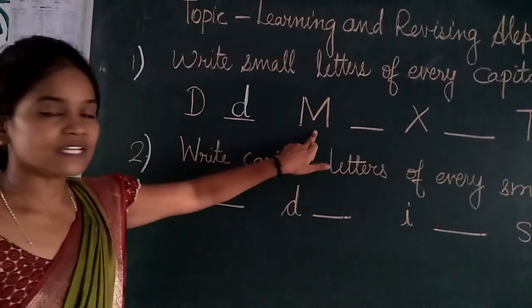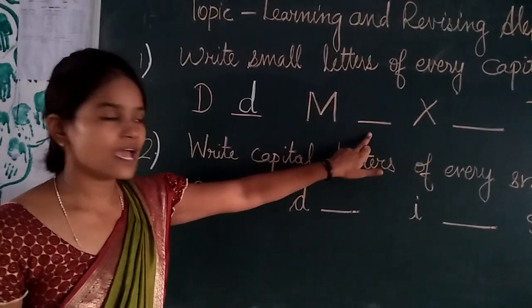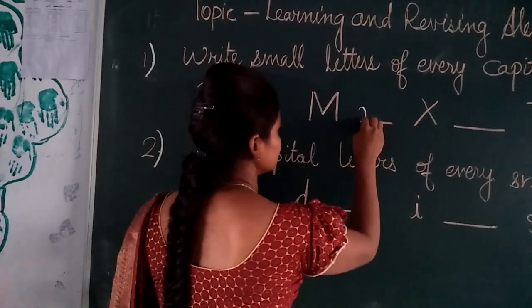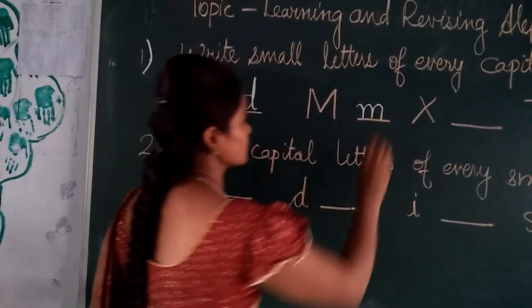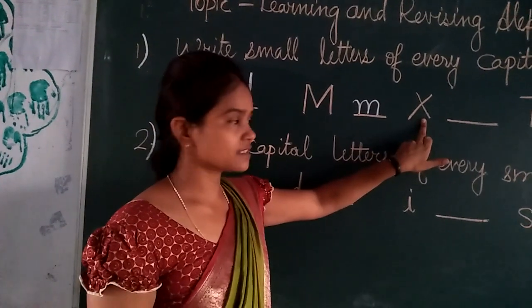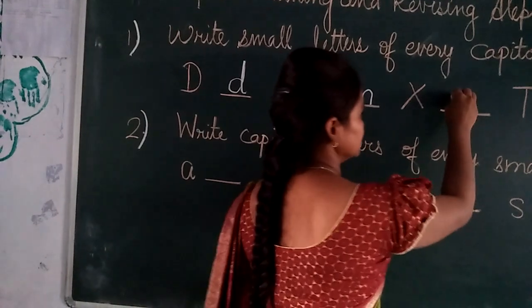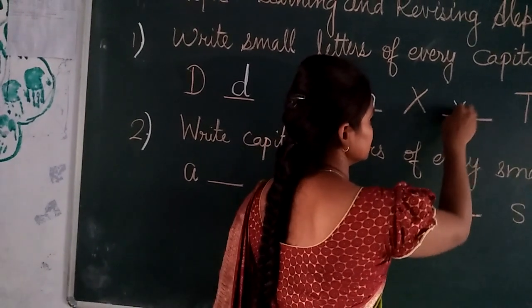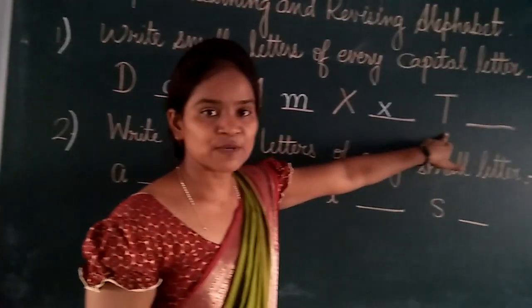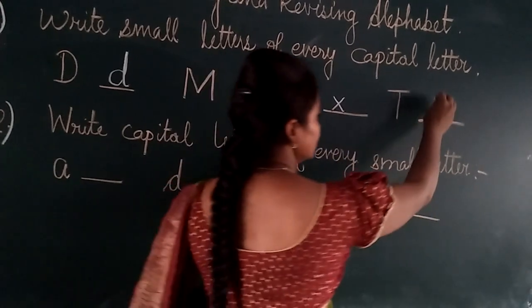Capital M — now we will write small M. Capital X — we will write small X. This is capital T — now we will write small T.